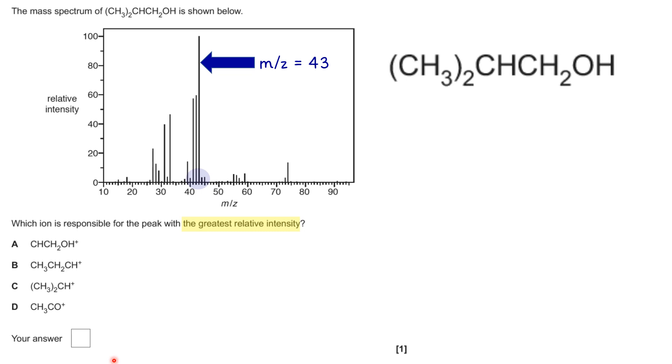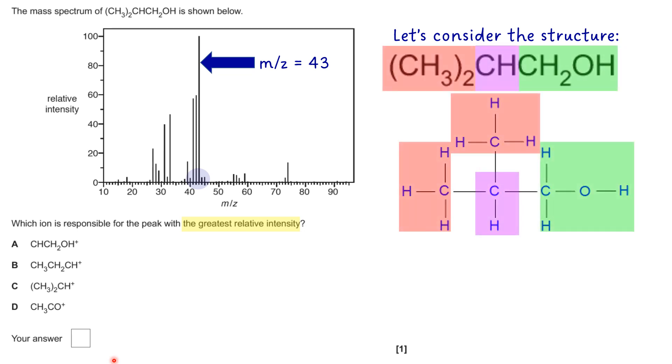So now let's have a look at the structure, and if we help to break it down into various sections by color coding, you can start to maybe visualize what fragments might or might not come off it.